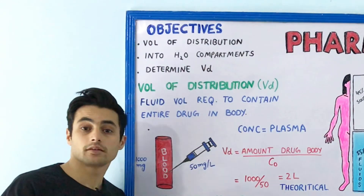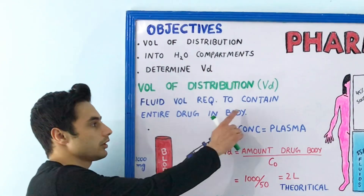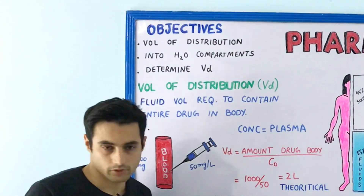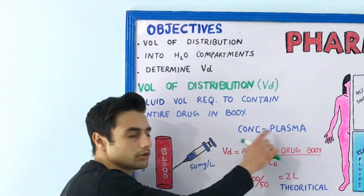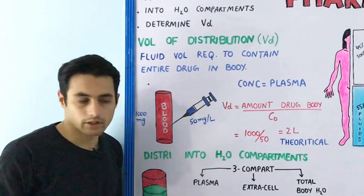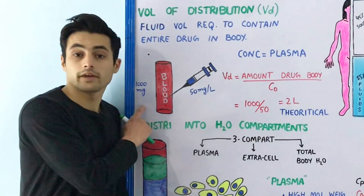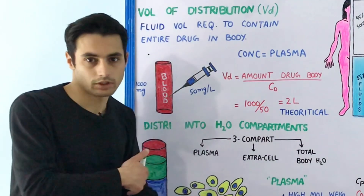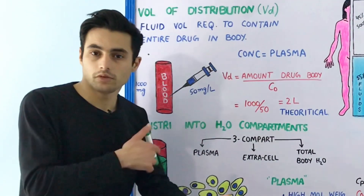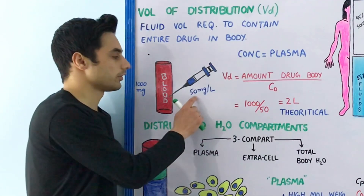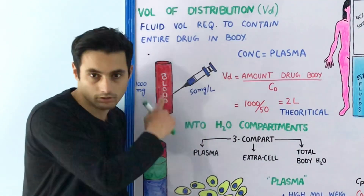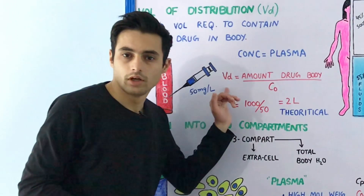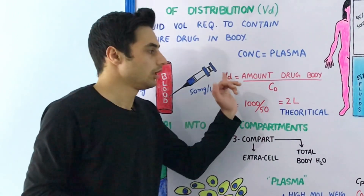The volume of distribution is defined as the fluid volume which is required to contain the entire drug in your body at the same concentration which was measured in your plasma. Have a look at this diagram — imagine you inject 1000 milligrams of drug into your bloodstream, into your plasma. The concentration of the drug as soon as you inject it was 50 milligrams per liter in your plasma. You can determine the volume of distribution by using this formula.